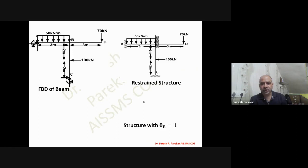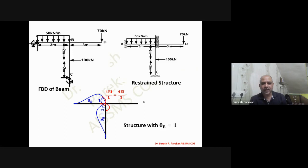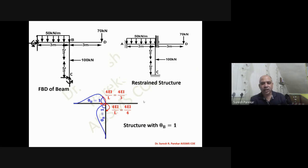We apply θB = 1. The stiffness contribution is 4EI/L, so 4EI/3 for BA and 4EI/4 for BC. The total stiffness S is the sum of these two values.